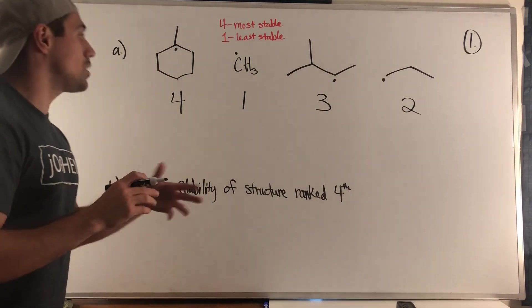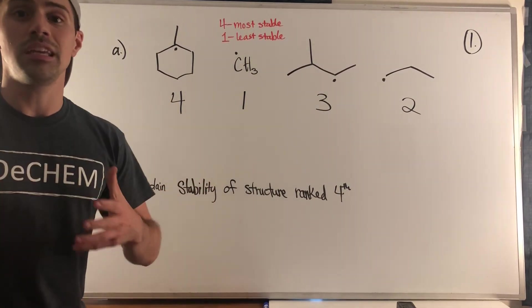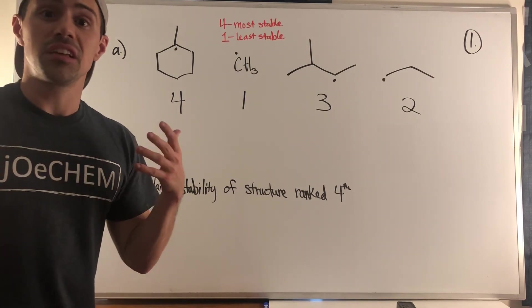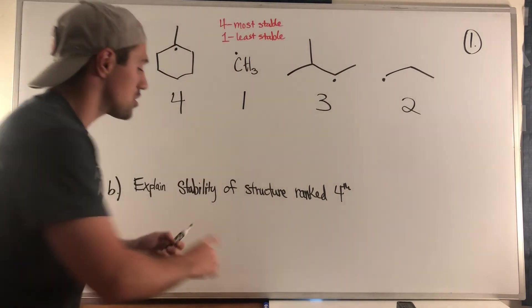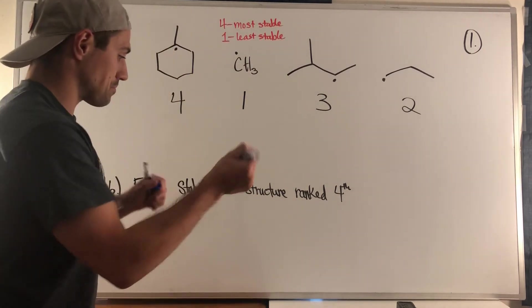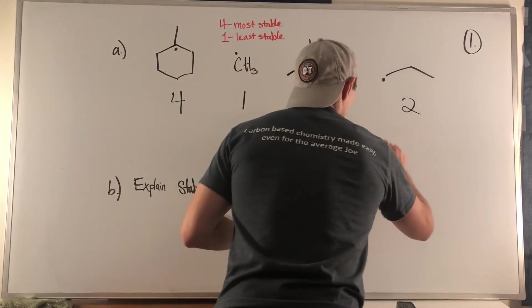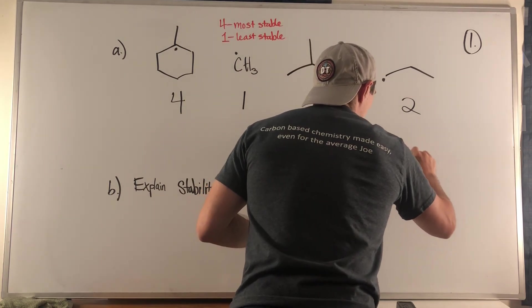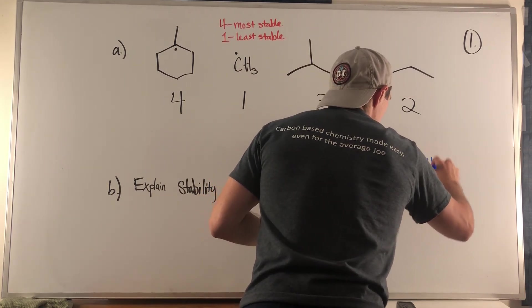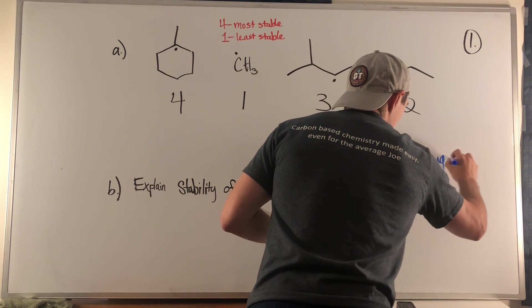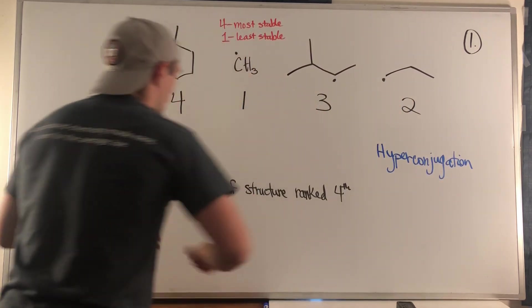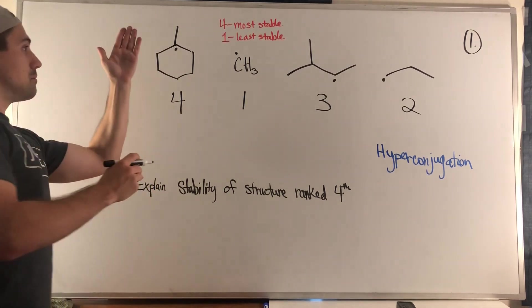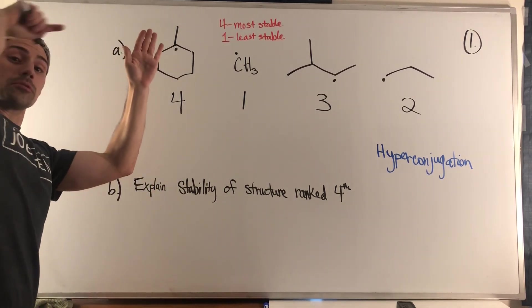And now in B, we need to explain why that tertiary carbon radical is as stable as it is, especially being better than these other options. And this is just a nice refresher of hyperconjugation. So if you knew the answer was due to hyperconjugation, but you kind of forgot how to explain it, don't worry, we're right about to do it.